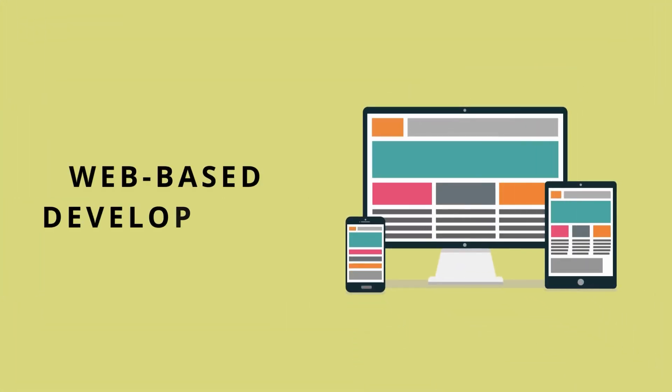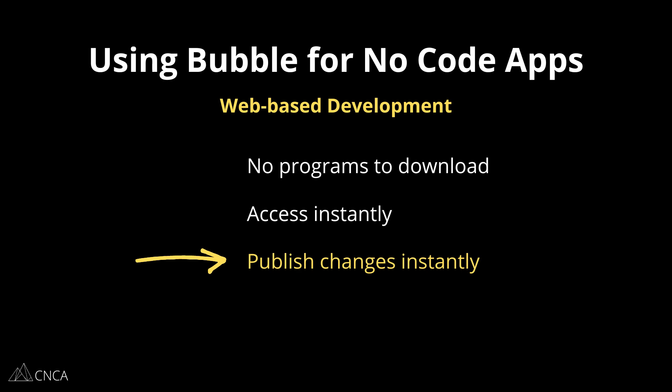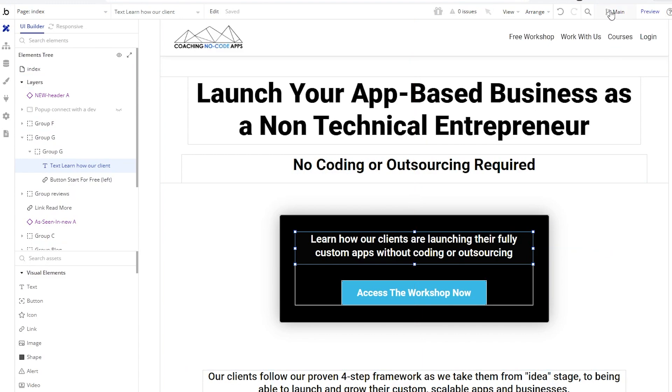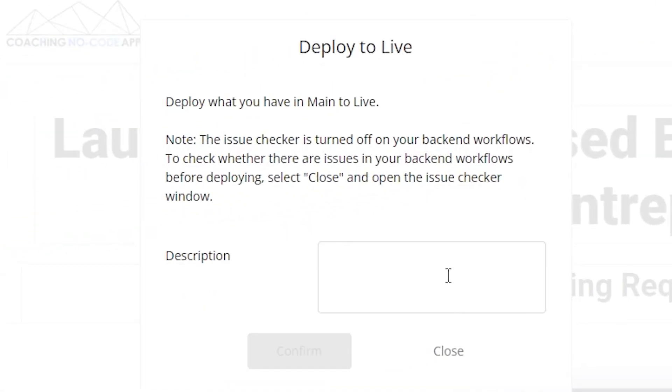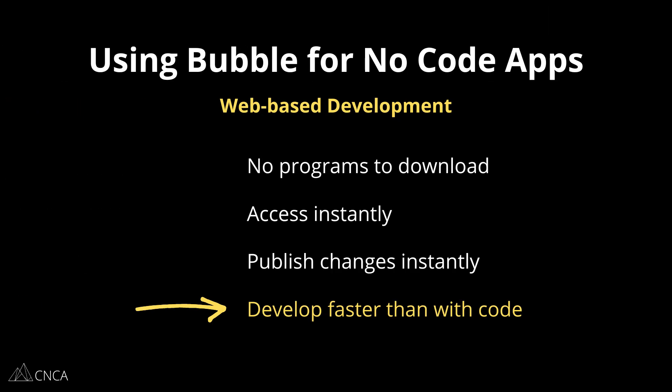Bubble is completely web-based, which makes everyone's experience much more universal — both you as the developer and your front-end users. In building the application, there aren't any special tools or programs to download and install to your computer; you do everything from a browser. As soon as you create your web app, it's instantly accessible online. Your users can go on any device, any browser, and access your app just like a traditional website — nothing to download or install. Making changes to your application is very instant. You can choose when you're ready to deploy new changes to the live version, and they'll be instantly available for your users. You don't have to worry about juggling different versions like you do with traditional code, making your turnaround time in development significantly faster.